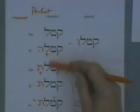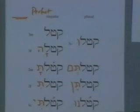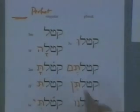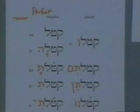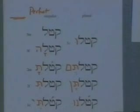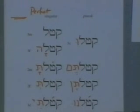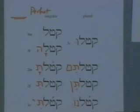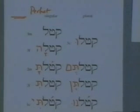Now, what's good news, of course, is that all the endings you've learned — katal, katala, katalta, which are in red on here — you've already learned. Those are the endings of the perfect in the Qal. Those are the endings of the perfect in the Pi'al, and in the Nifal, and in the Hifil, and in the Hofal. You already know this stuff. We're not learning a whole bunch of new verb forms.